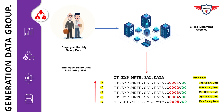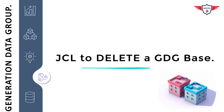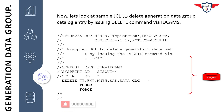Here's a sample JCL to delete generation data group catalog entries using the delete command. You have to use the IDCAMS utility for that. The first two lines are the job card, which is used to specify the information related to a job. Then you have a few comments so you can understand what exactly this job is doing, followed by the IDCAMS utility, which is invoked by an execute statement.